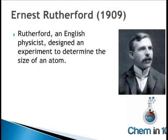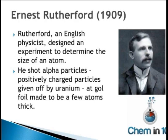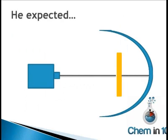Ernest Rutherford in 1909, another English scientist, designed an experiment to determine the size of the atom. He shot alpha particles — positively charged particles given off by uranium — at gold foil made to be only a few atoms thick. He expected the alpha particles to pass right through the gold foil, because as the positive charge was spread out evenly throughout the atom according to the plum pudding model, there wouldn't be enough positive charge in any one part of the atom to stop the alpha particles.